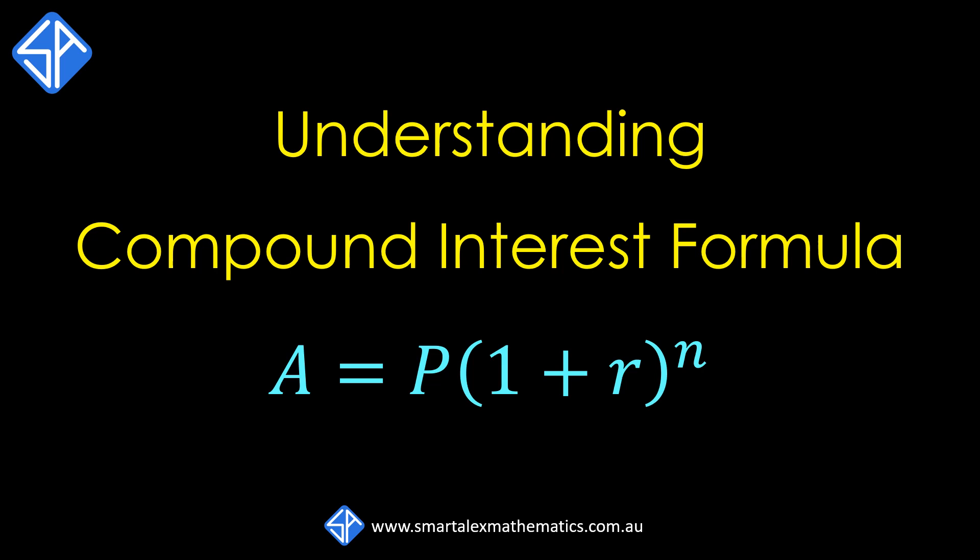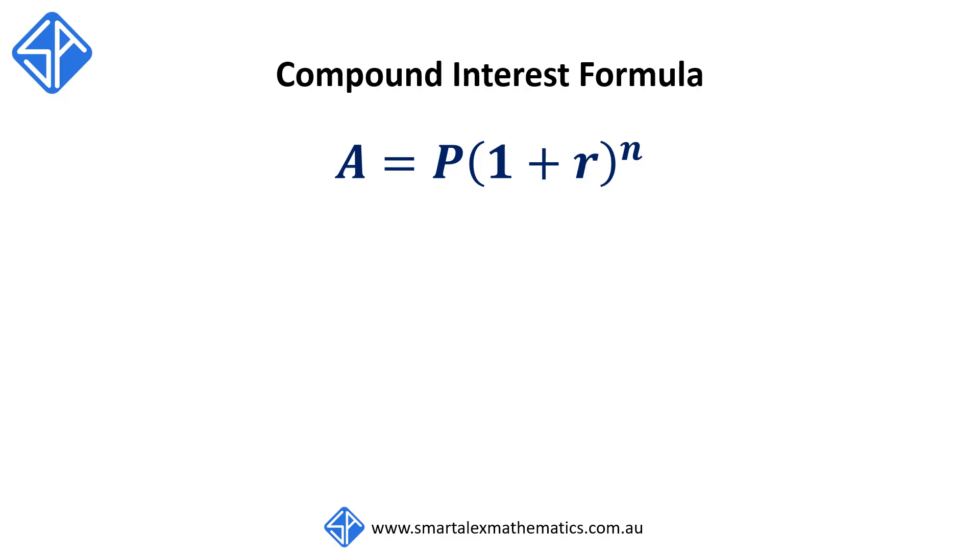In this video, we're going to look at how the compound interest formula is derived. The compound interest formula is given by A equals P times 1 plus R to the power of N.